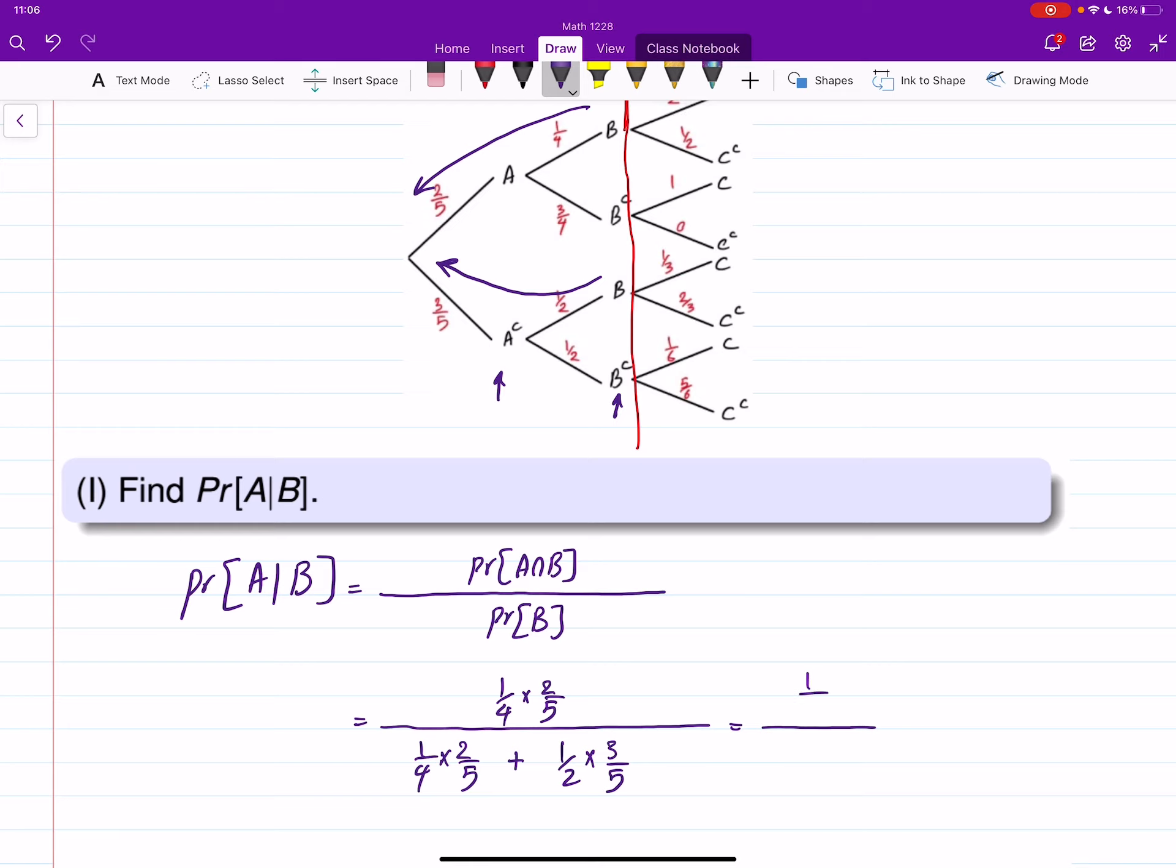This is 1 over 10. This is 1 over 10. And that is 3 over 10. This all together is 1 over 10 over 4 over 10. You can cancel these guys. This is 1 over 4.